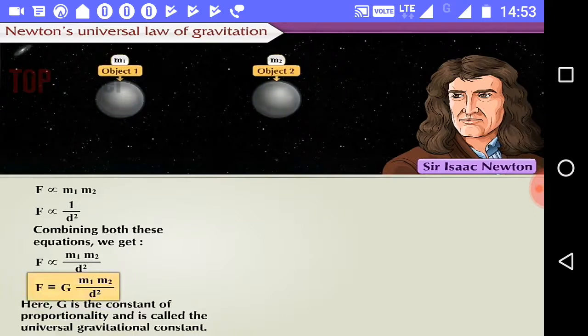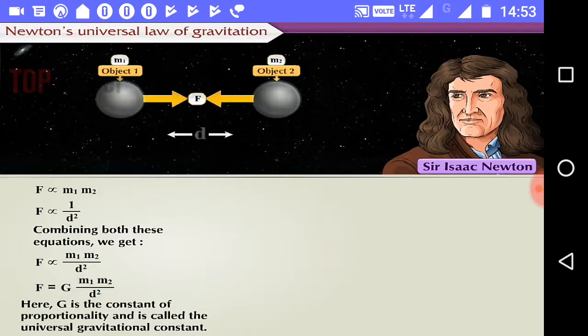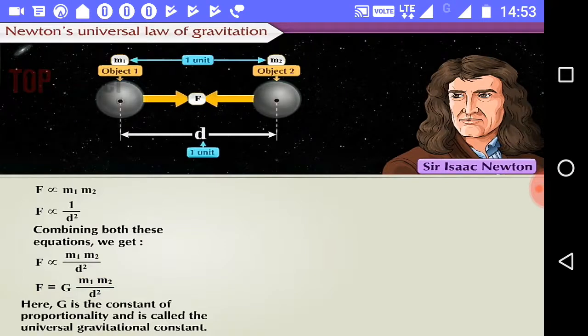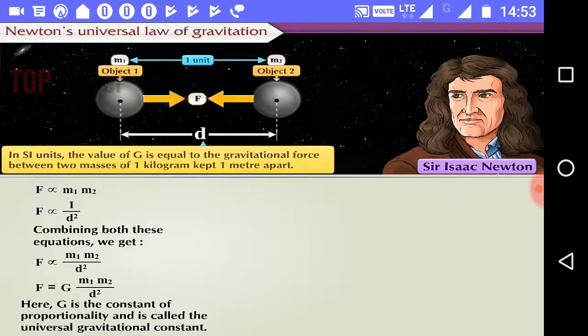From this equation, it can be seen that the value of G is the gravitational force acting between two unit masses kept at a unit distance away from each other. Thus, in SI units, the value of G is equal to the gravitational force between two masses of 1 kilogram kept 1 meter apart.